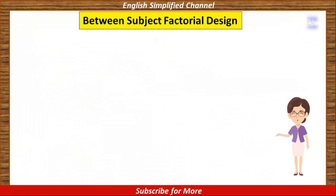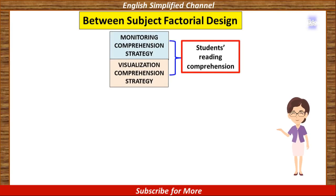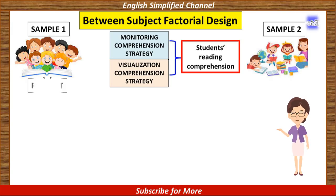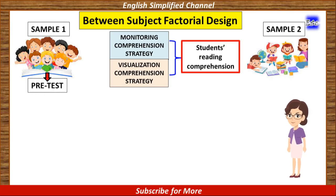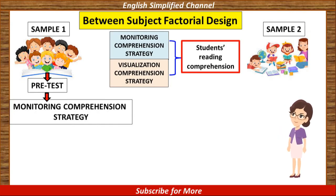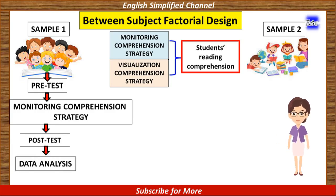The second type is between-subject factorial design. In this type, there are two groups of samples which are randomly selected and assigned. There are two independent variables: monitoring comprehension strategy and visualization comprehension strategy. The first step is to give a pre-test to group 1 to test the students' reading comprehension before the treatment. After that, we give the treatment — the first independent variable — teaching group 1 by applying monitoring comprehension strategy. We then check whether it has a significant effect by giving a post-test and analyzing the data by comparing the means of the pre-test and post-test.